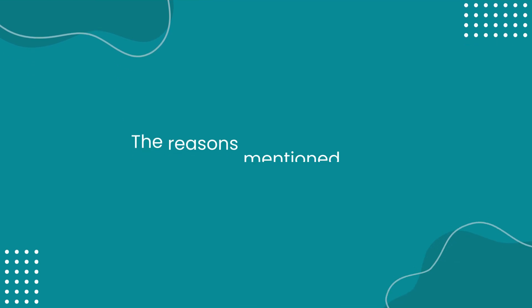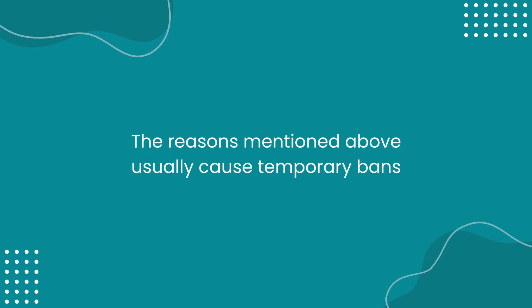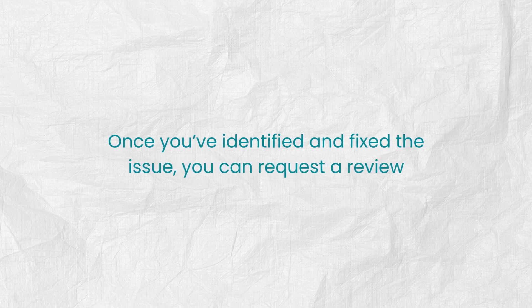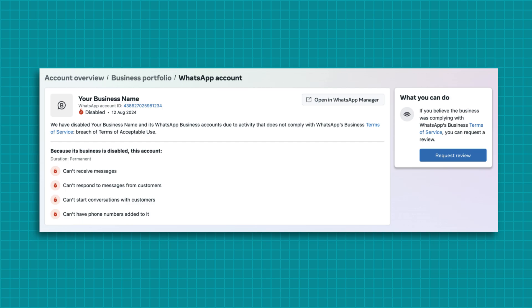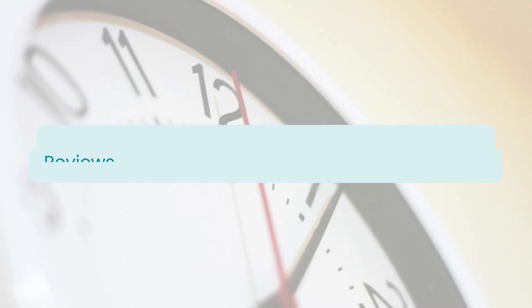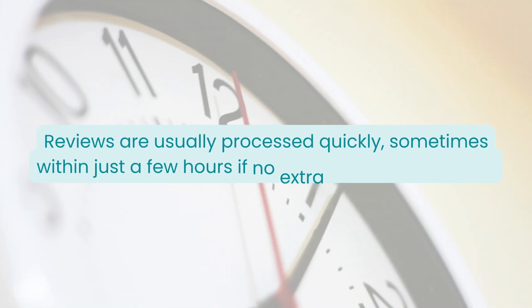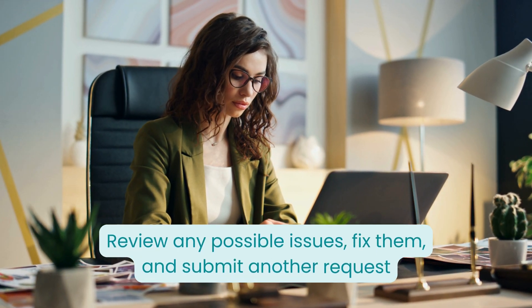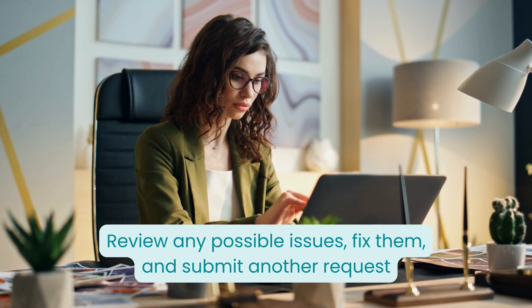The reasons mentioned above usually cause temporary bans. Once you've identified and fixed the issue, you can request a review. From the review page in WhatsApp manager, you'll see a Request Review button. Click on that to submit a short, professional message explaining the situation. Reviews are usually processed quickly, sometimes within just a few hours if no extra details are needed. If your request is declined, don't give up — review any possible issues, fix them, and submit another request.